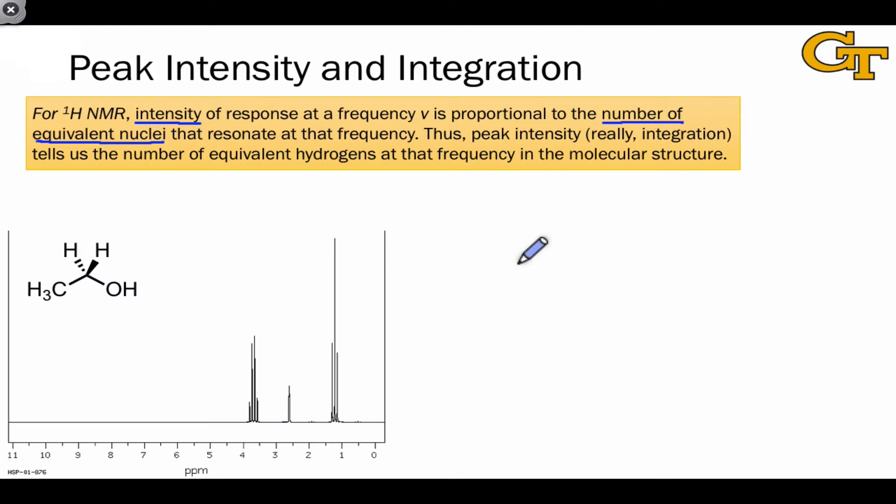The height of the peak can be deceptive, though, because how broad the peak is affects its height, and peak broadening can happen due to structural factors. And so, rather than looking just at the peak height, we look at the area under the peak, or the integration, to determine the number of hydrogens associated with the signal.